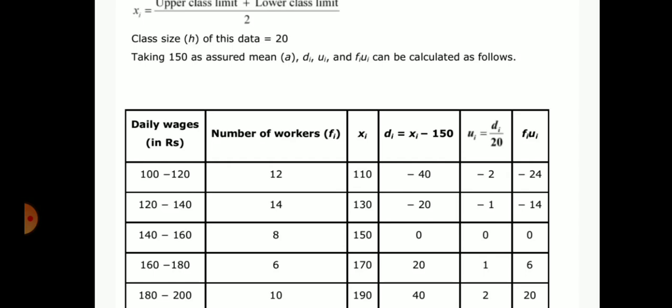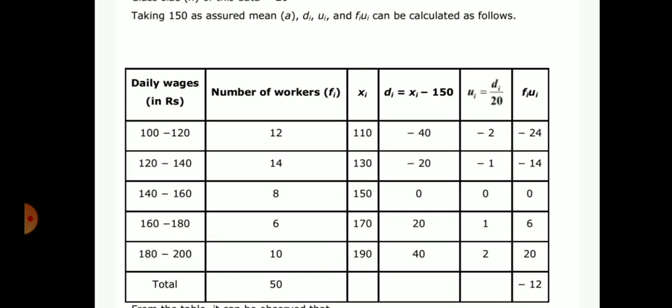Then xi is the class mark, upper limit plus lower limit divided by 2, which gives 110, 130, 150, 170, 190. di equals xi minus 150, the assumed mean, giving -40, -20, 0, 20, 40. ui equals di divided by 20, the class size, giving -2, -1, 0, 1, 2. fiui equals 12 into -2 is -24, 14 into -1 is -14, 0, 6, 20.